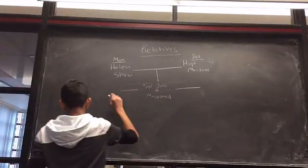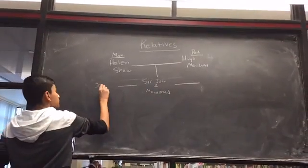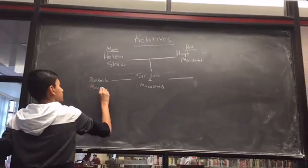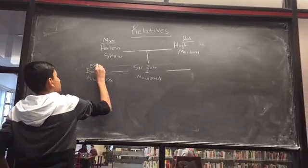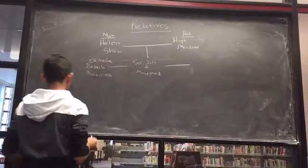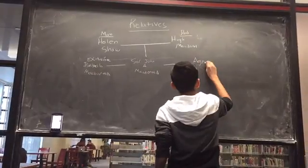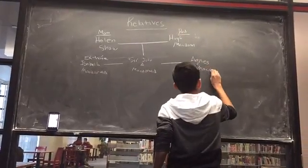Sir John A. Macdonald had two wives. His first wife was Isabella Macdonald. His second wife was Agnes Macdonald.